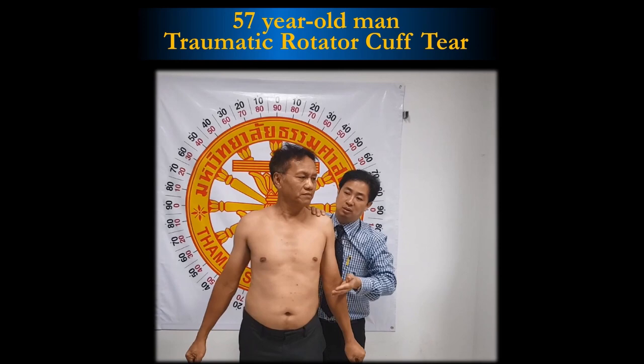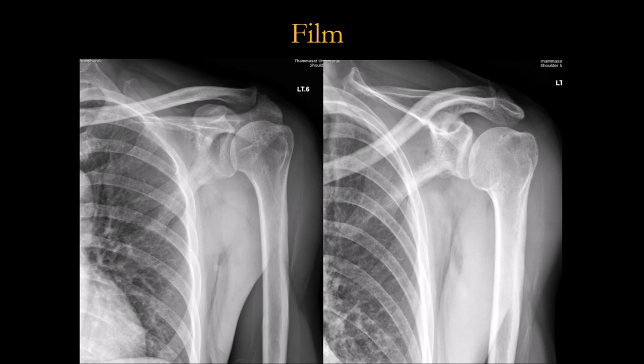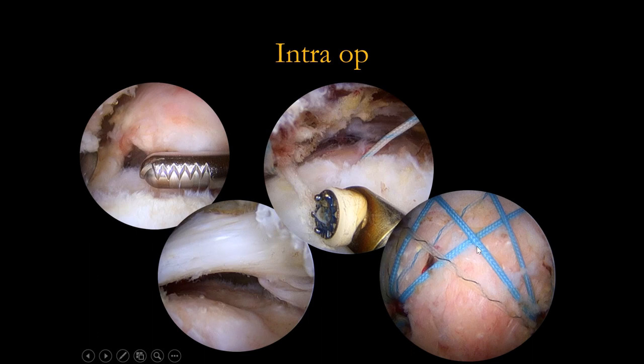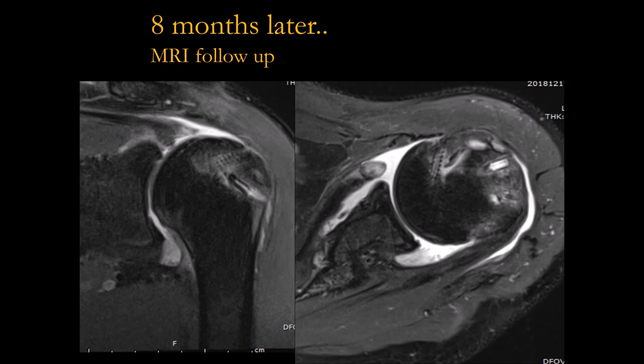First case: a 57-year-old with traumatic cuff tear — weakness of supraspinatus and subscapularis, small tear, good acromiohumeral interval. I performed the repair, but this patient was lost to follow-up for eight months. He went back to work the very next week after surgery and never came back for follow-up. He returned with a failed repair.